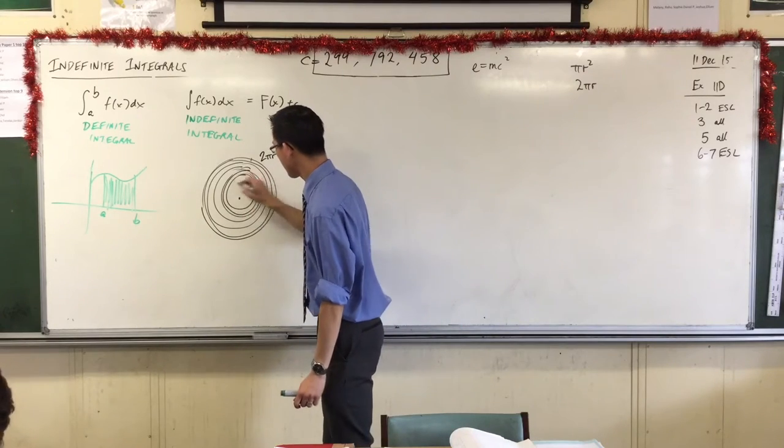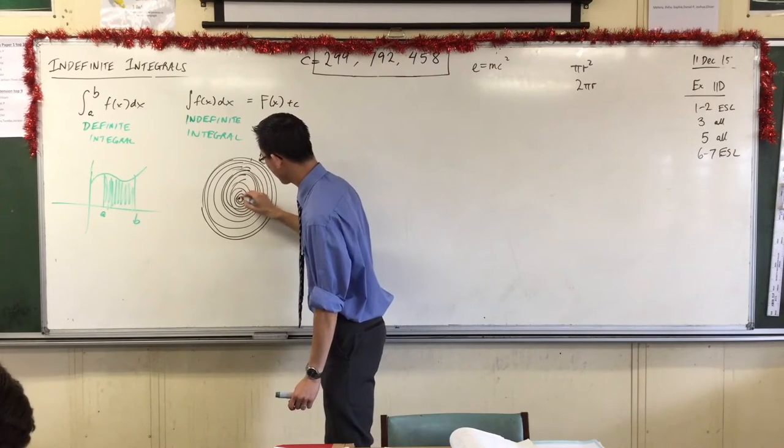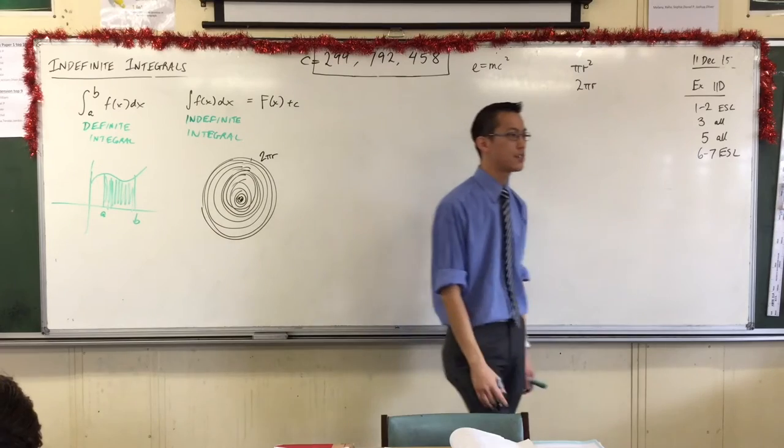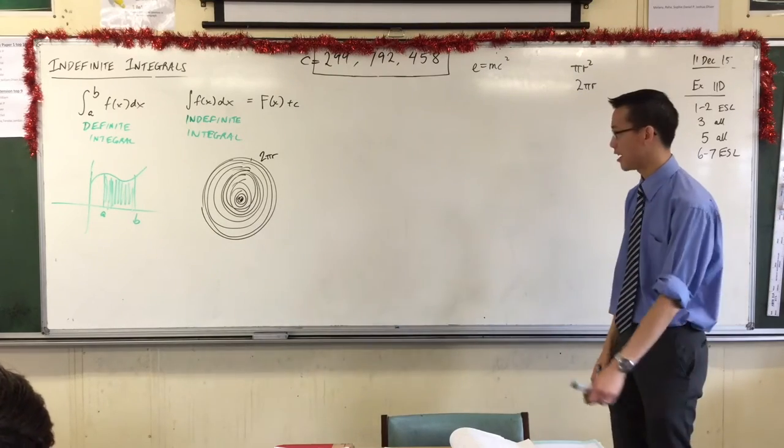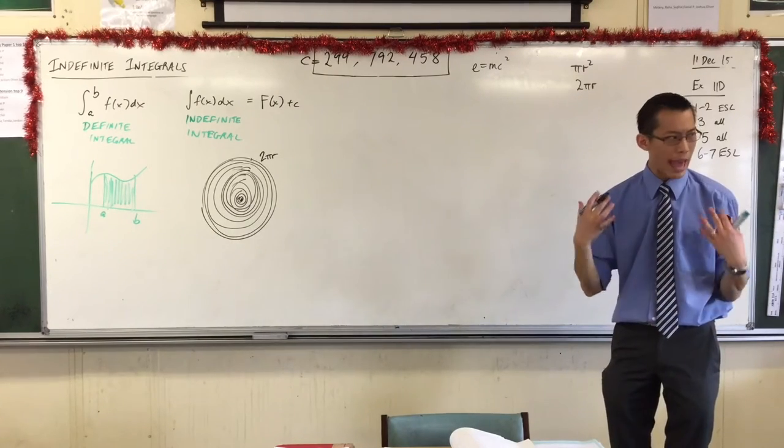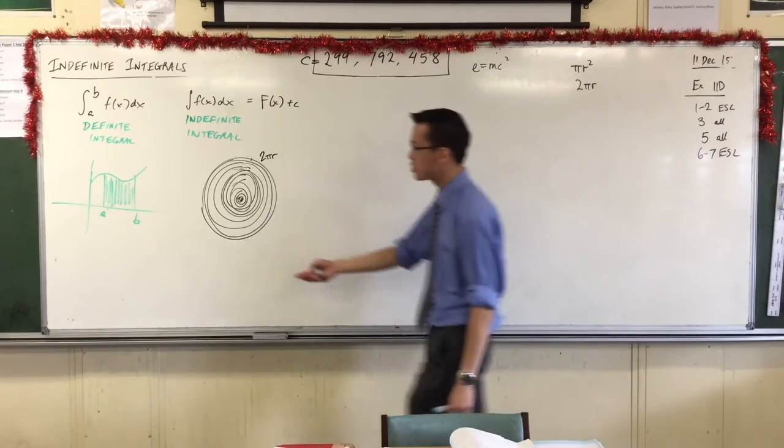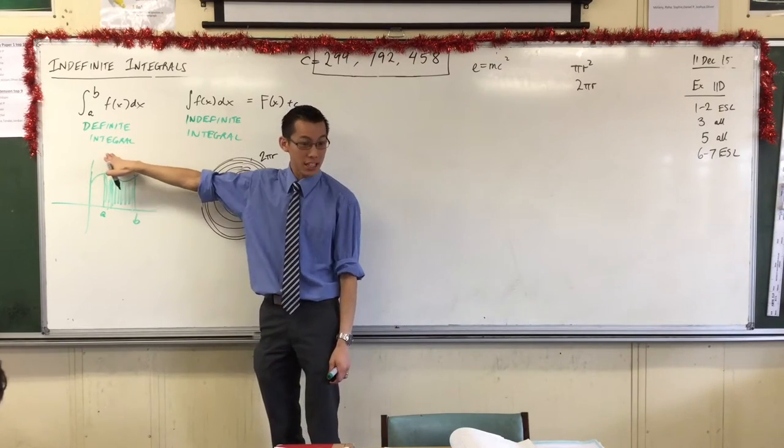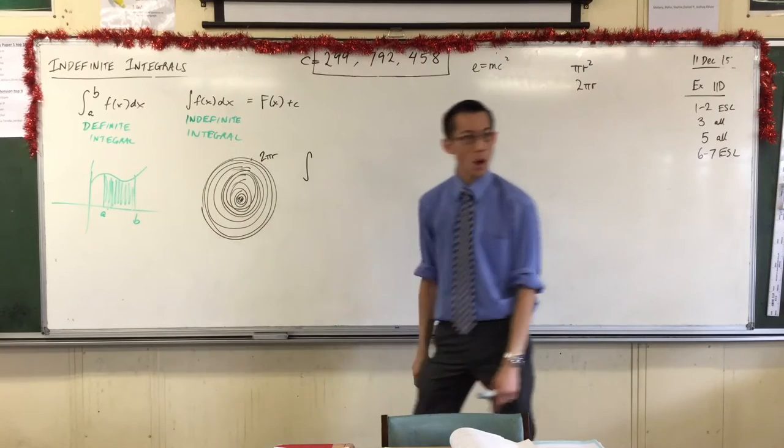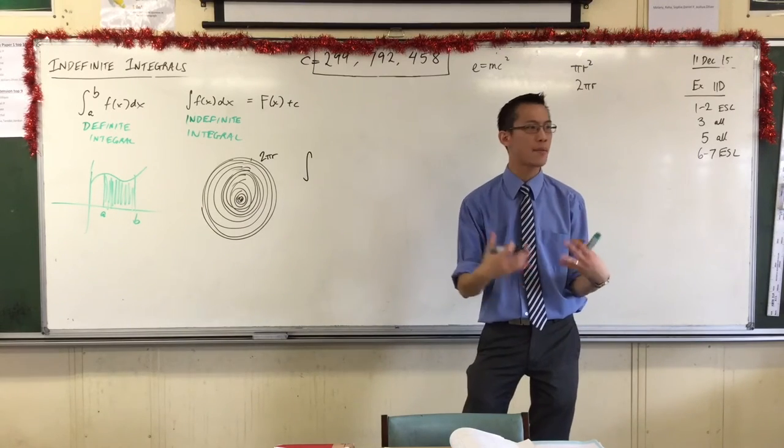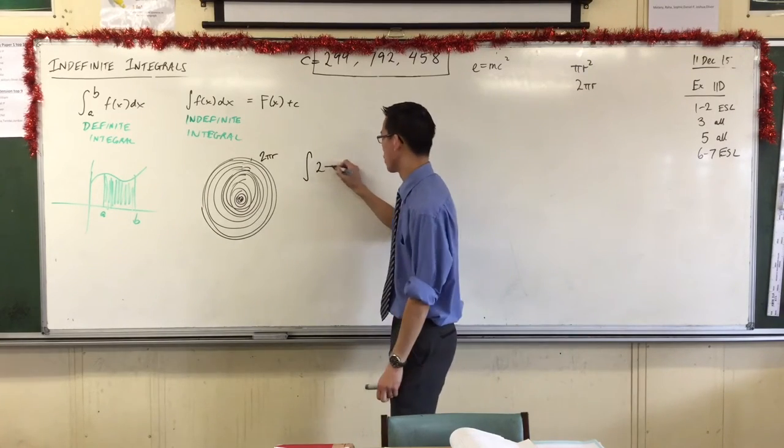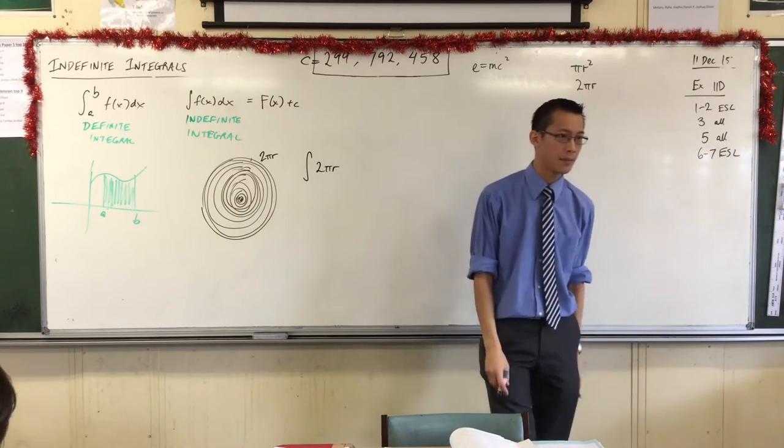So you have this infinite series of infinitesimally thin circumferences. Now, how will I add all of these things together? Well, the answer is I want to integrate them. What's the function that I'm adding up? I'm adding up a whole bunch of circumferences.